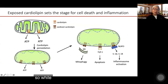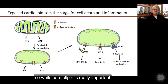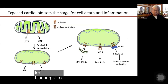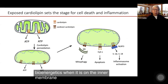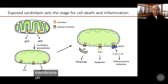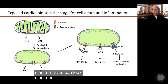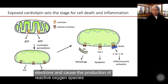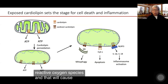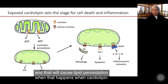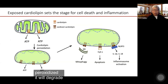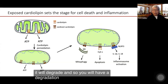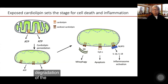While cardiolipin is really important for bioenergetics when it is on the inner membrane, it is also in an area where the electron chain can leak electrons and cause the production of reactive oxygen species. And that will cause lipid peroxidation. When cardiolipin is peroxidized, it will degrade, and so you will have a degradation of the cristae membranes.